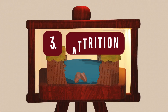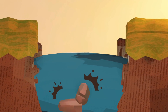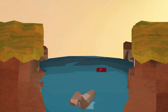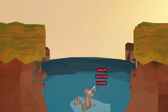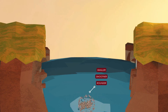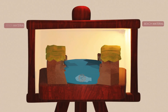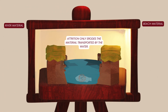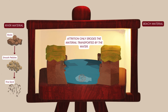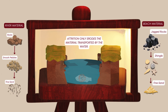Step three: attrition. Attrition occurs when rocks and pebbles collide with each other, breaking into smaller, smoother and rounder pieces. Unlike other types of erosion, attrition does not directly erode the land — it affects the material being transported by the water. Over time, rocks become smaller, rounder and smoother, forming shingle on beaches or fine sand along rivers and coasts. Attrition helps to shape beaches, turning jagged rocks into smooth pebbles and sand over time.